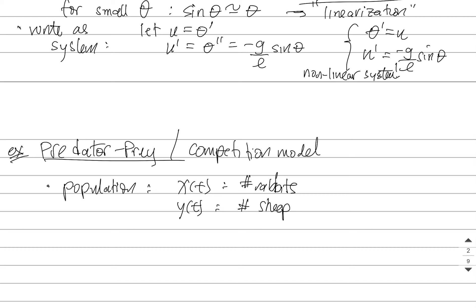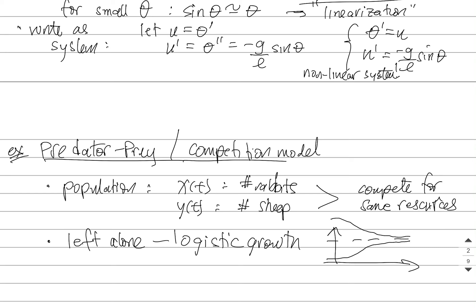Now in a competition model like this, these two populations are coexisting, but they compete for the same resources. And when they compete for the same resources, we have to somehow incorporate that competition into a model. So if these populations were left alone, they would generally follow logistic growth. And if you remember from autonomous first-order DEs, logistic growth is some kind of curve that behaves like this. All the populations eventually tend to what's called this carrying capacity.